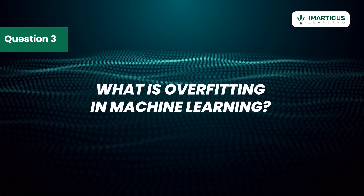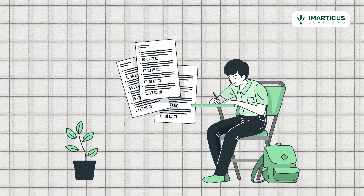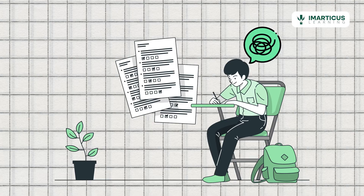What is overfitting in machine learning? Let's talk about overfitting. Picture a model that gets so good at memorizing the training data that it fails spectacularly when faced with new data. It's like a student who memorizes answers without understanding the concepts — great for a pop quiz, but not for real-world application.